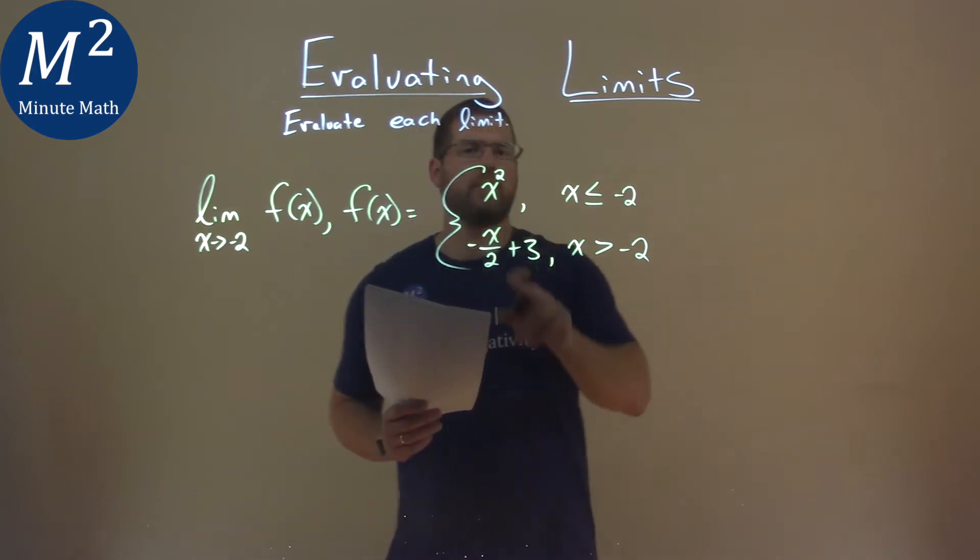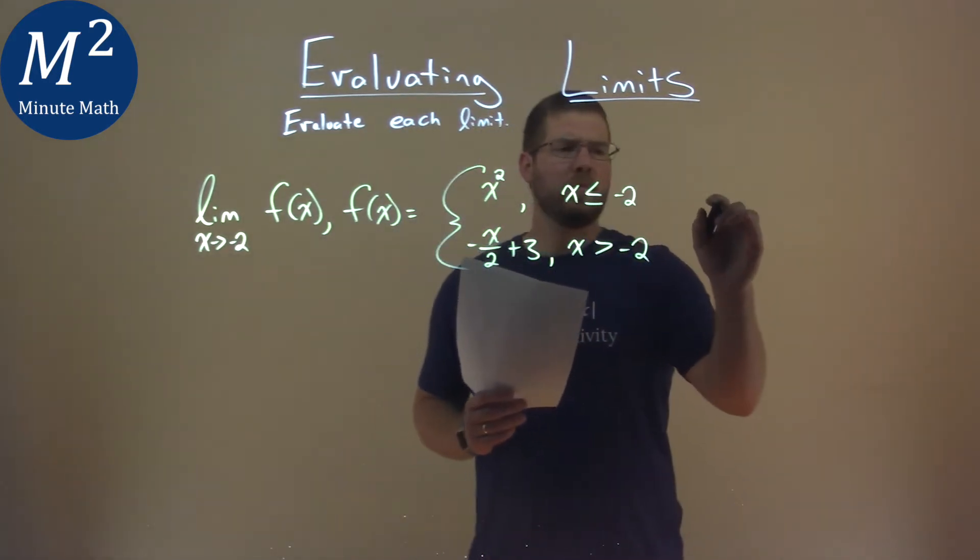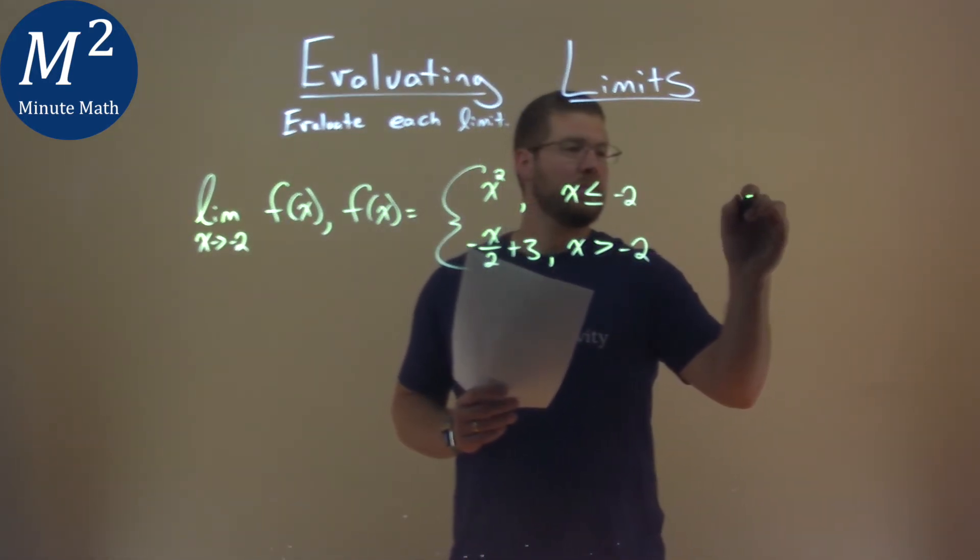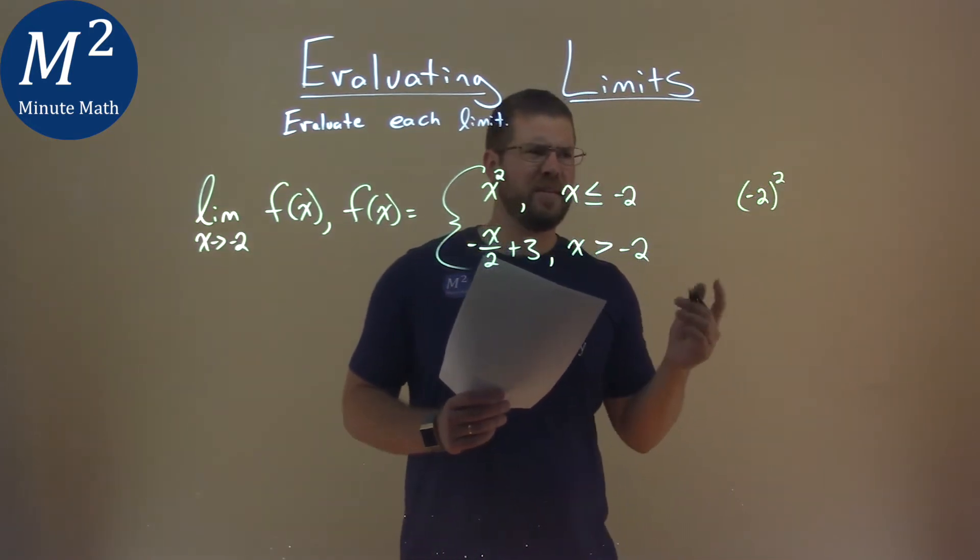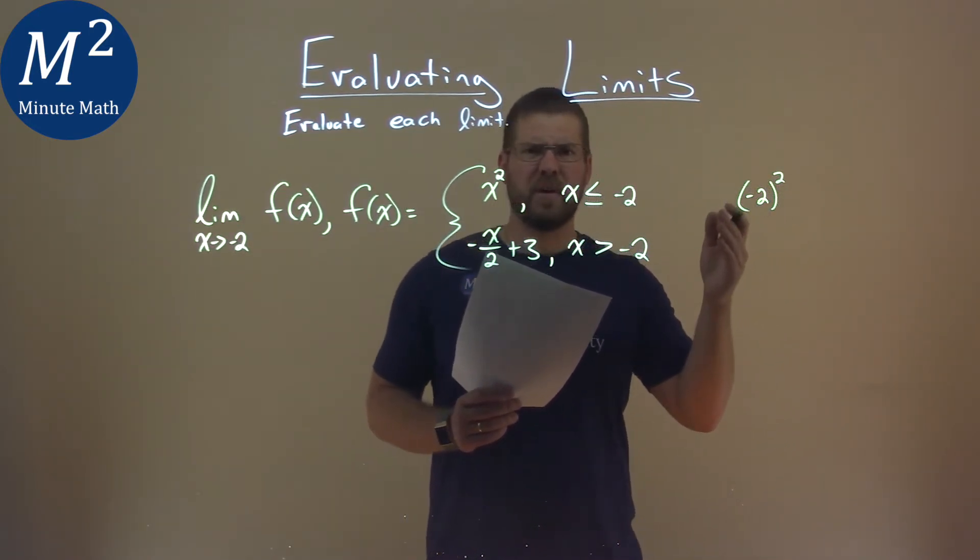So let's deal with the top part here, the first one. What happens when we plug a negative 2 in for x? We have negative 2 squared. That's easy. Negative 2 squared is, well, positive 4.